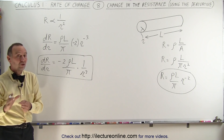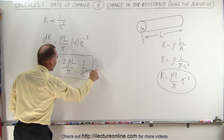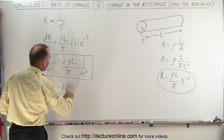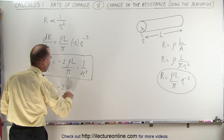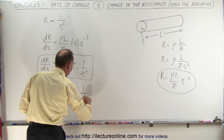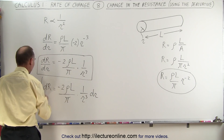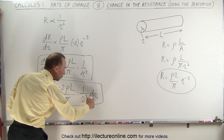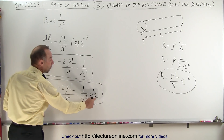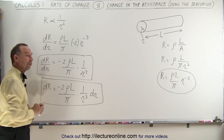Now, if we want an equation that describes how much the resistance is changing when the radius is changing, we multiply both sides by dr. The change in resistance ΔR will be equal to minus 2 times rho times the length, divided by pi, times 1 over r cubed, times dr. This equation tells us how much the resistance will change when we have a small change in the radius. Notice the negative sign: when dr is positive — when the radius gets a little bit bigger — we have a smaller resistance.